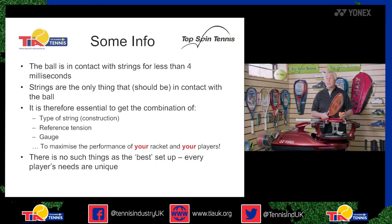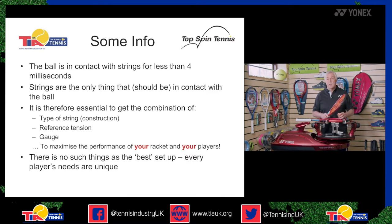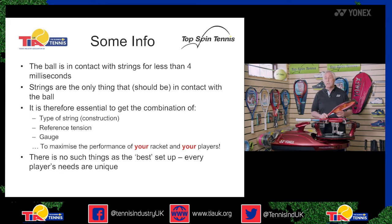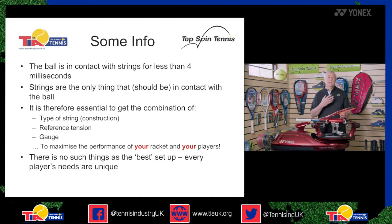Before we get into the nitty gritty, let's look at some basic information. The ball is in contact with strings for less than four milliseconds — a lot is happening in that time. Strings are the only thing that should come in contact with the ball. It's therefore essential to get the right combination of string type, reference tension, and gauge to get maximum performance out of your racket, strings, and play. There's no such thing as a best setup — every player is different, and that's where talking to a racket sports professional will help.